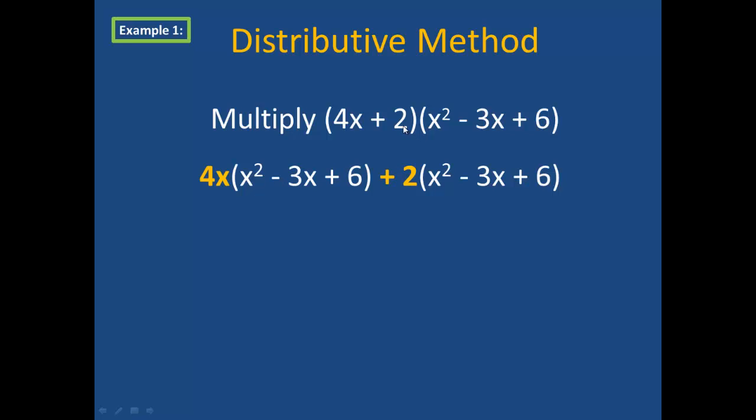I will then multiply 2, which is the second term of the first polynomial, by the entire second polynomial, giving me 2 times x squared minus 3x plus 6. My next step is to do the multiplying of the monomials by each trinomial, giving me 4x to the third for 4x times x squared. I then have 4x times negative 3x is negative 12x squared, and 4x times 6 is 24x. Moving on, I have 2 times x squared is 2x squared, 2 times negative 3x is negative 6x, and lastly, 2 times 6 is 12.